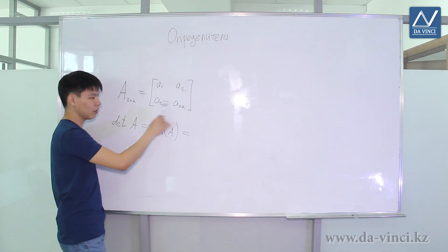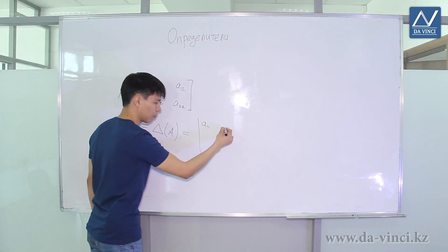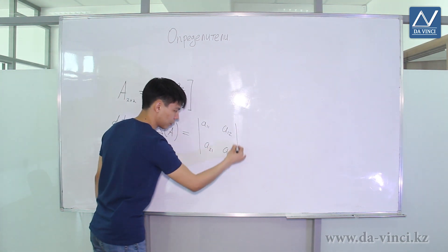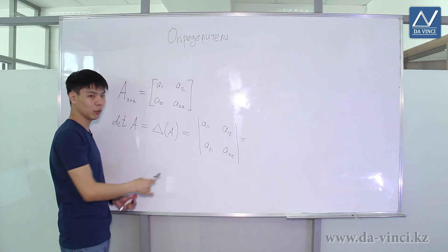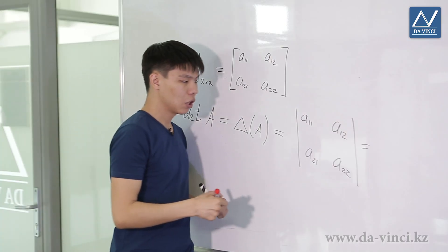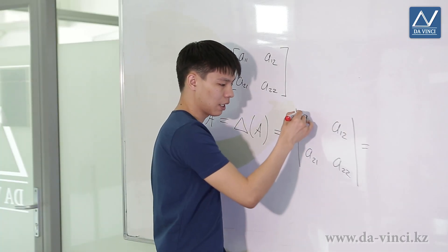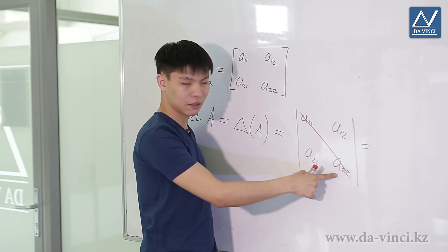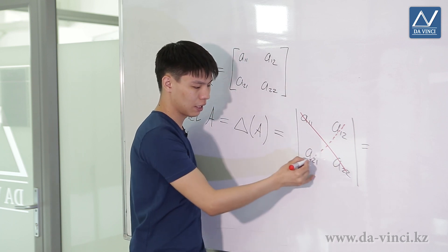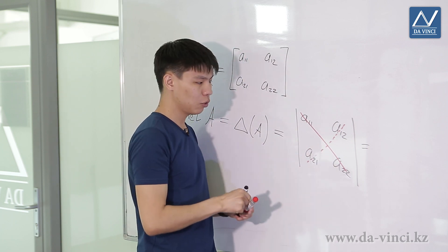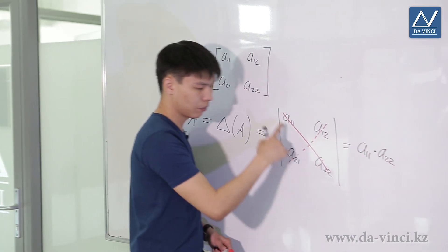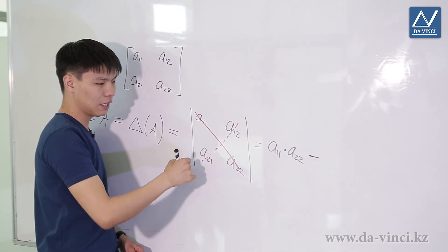It is denoted like the matrix but in square brackets. That is, it is a number. In the case of a 2 by 2 matrix, this is calculated as follows: we need to multiply the elements on the main diagonal, A11 by A22, and subtract the product of the elements on the secondary diagonal. That is, this determinant will be equal to A11 times A22 minus A12 times A21.